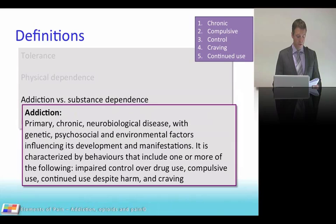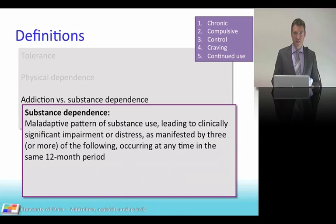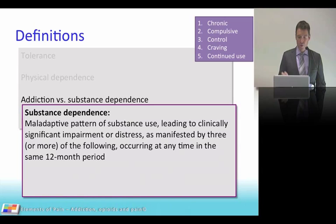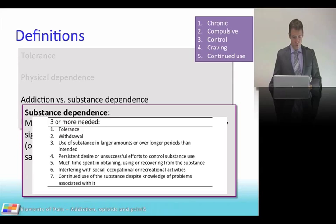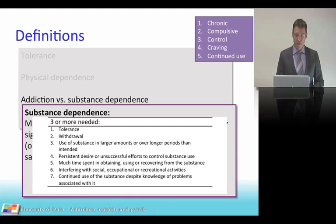Substance dependence is diagnosed according to DSM-4 as a maladaptive pattern of substance use leading to clinically significant impairment or distress, manifested by three or more of the following over a 12-month period: tolerance, withdrawal, use of substances in larger amounts over longer periods, persistent desire, time spent obtaining the drug, interference with social, occupational, or recreational activities, and continued use despite problems. Pick your term and stick to it.